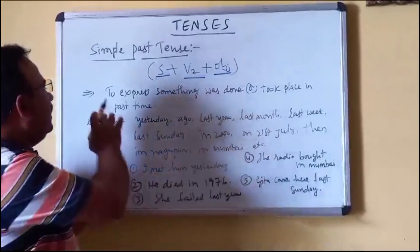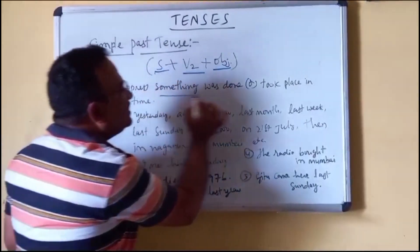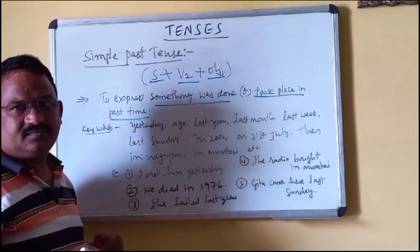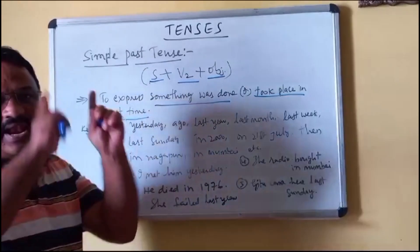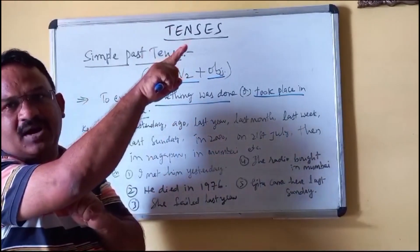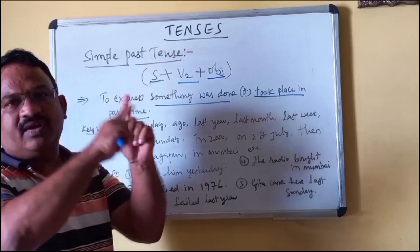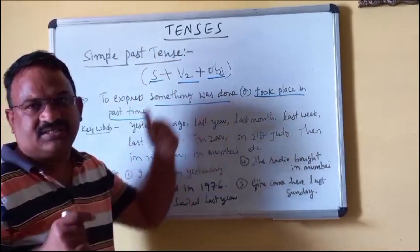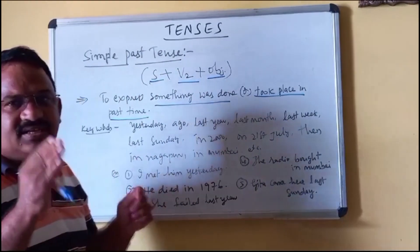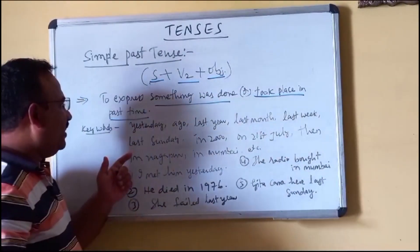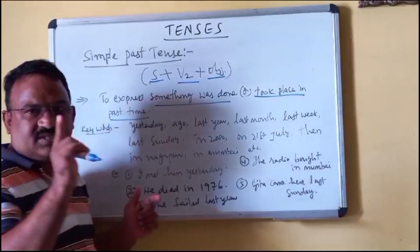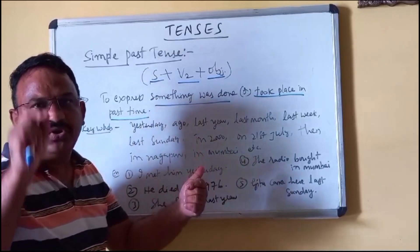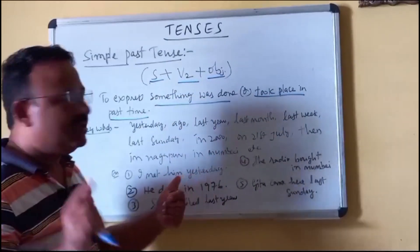The condition is to express something that was done or took place in the past — that means an action that happened in the past. Whatever past actions you have to express, you use simple past tense. Let us see some keywords. Wherever you see these keywords, just remember you have to use simple past tense.